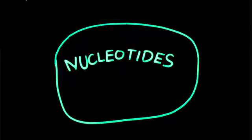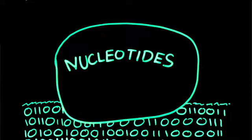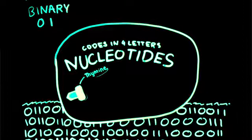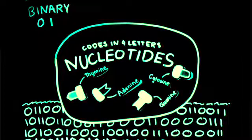Just like the computer language binary, which is a two-letter language, our DNA codes in four letters: thymine, adenine, guanine, and cytosine, and it uses it to code for our different traits.